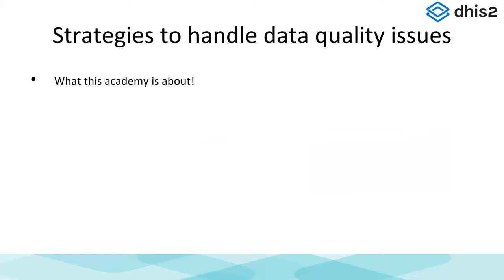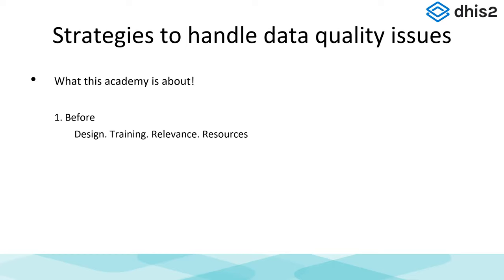Let's talk about some strategies to address data quality issues — this is really what this whole academy is about. A couple of points: first, even before any information system is launched, we need to appreciate how data quality affects design. We have an entire session on how to link design and data quality. We also need the right training processes and approaches to make sure people understand and are able to address data quality issues. We need to make sure everything is relevant and that we've taken into account various contexts — for example, DHIS2 can be configured to send automated emails when a data quality check is detected. But is an automated email relevant to a community health worker?